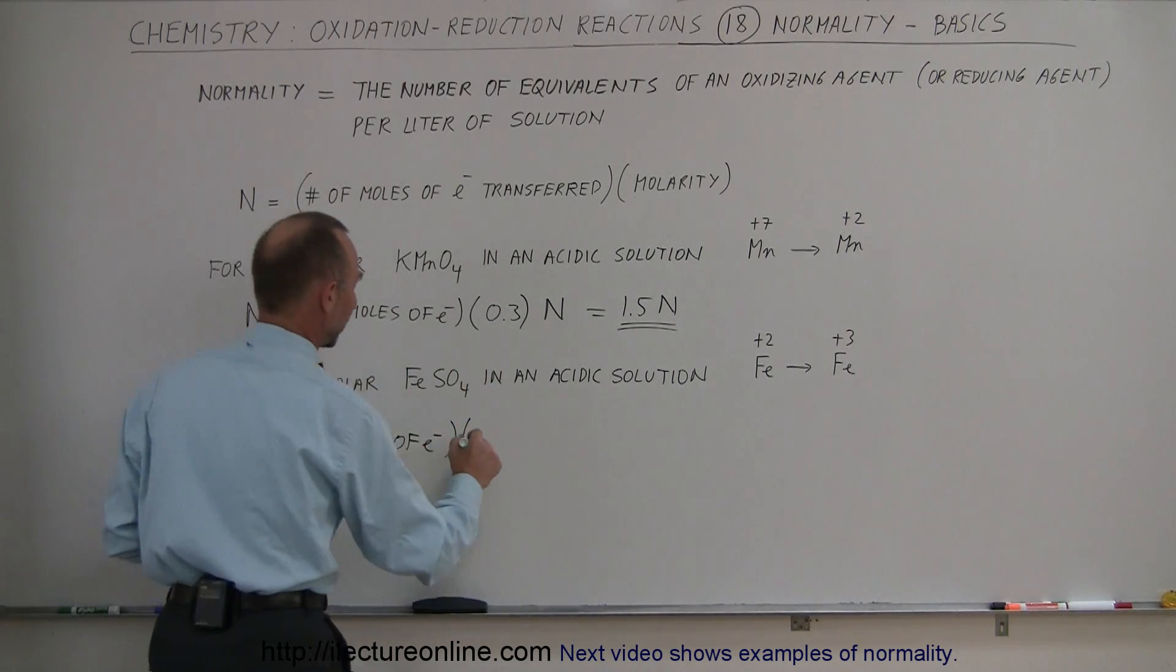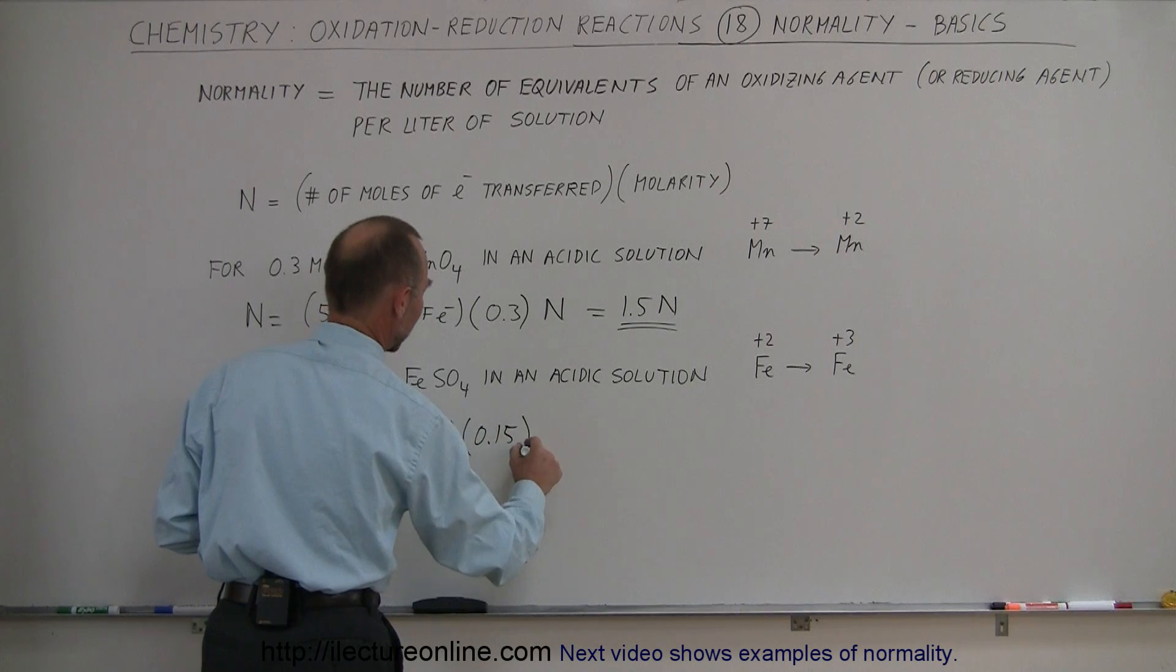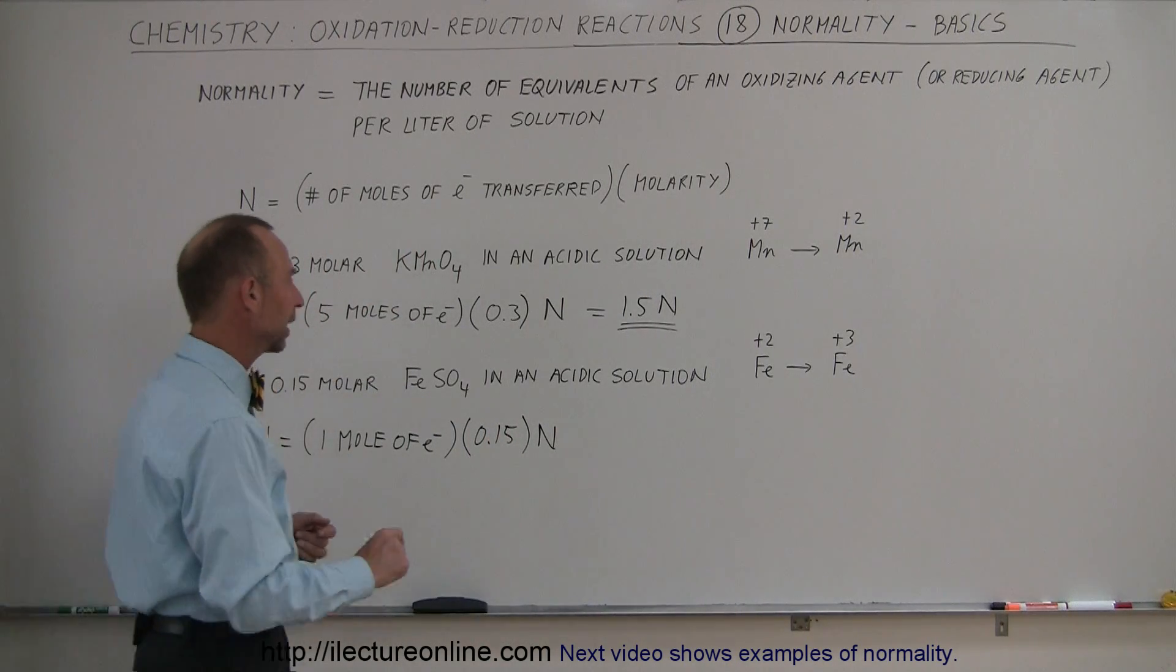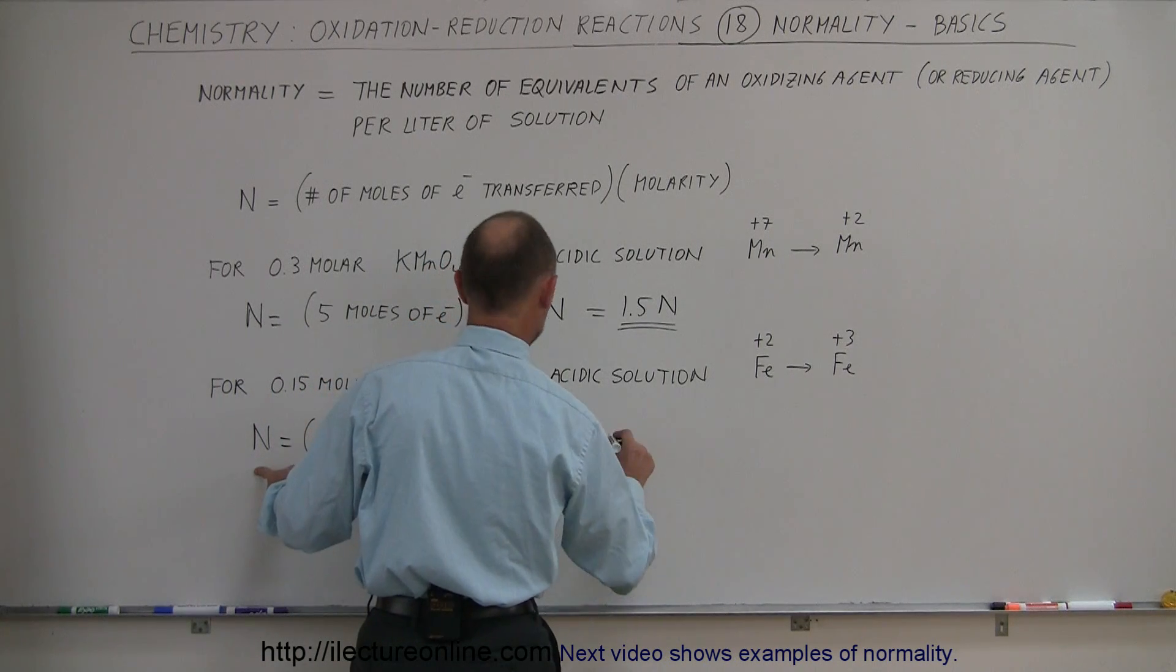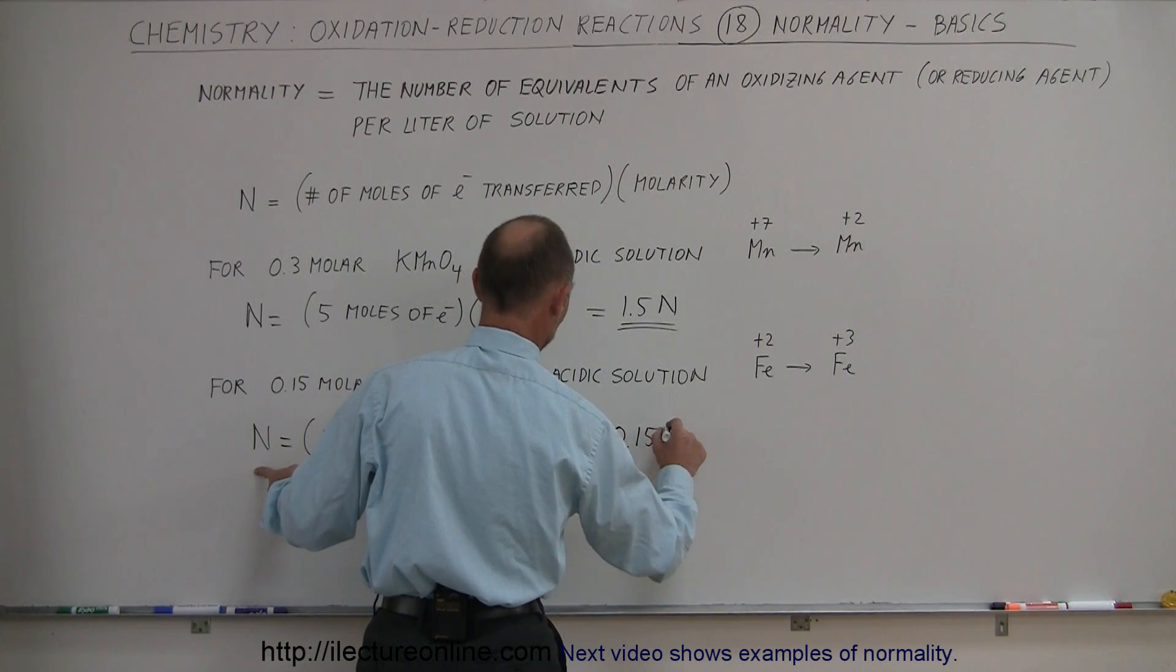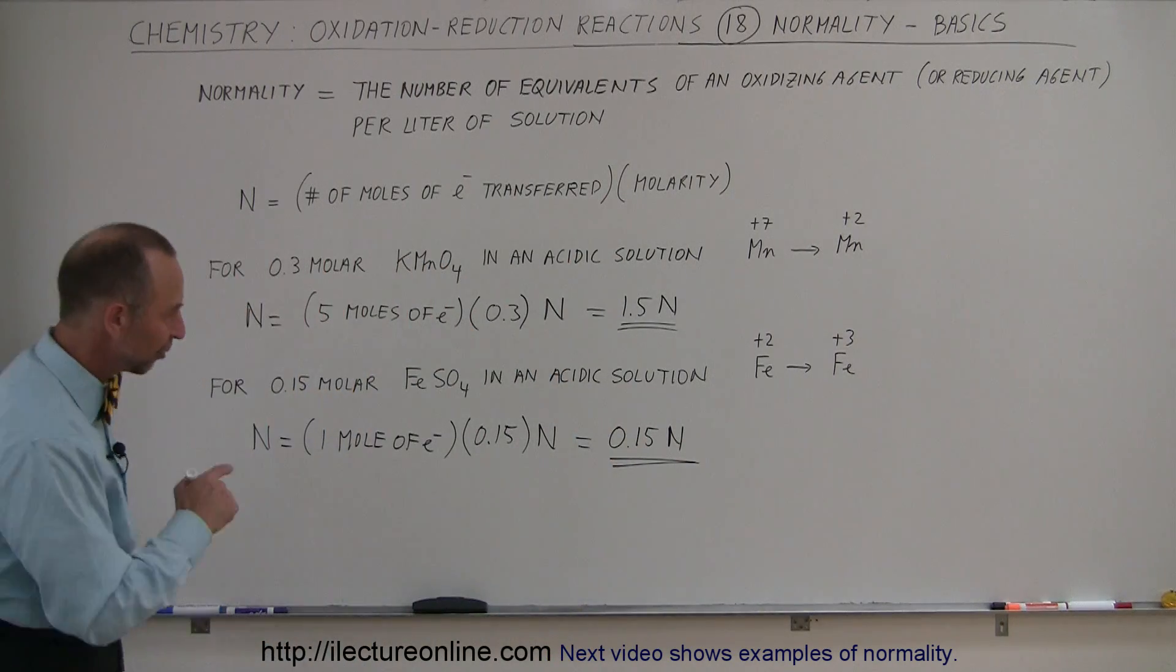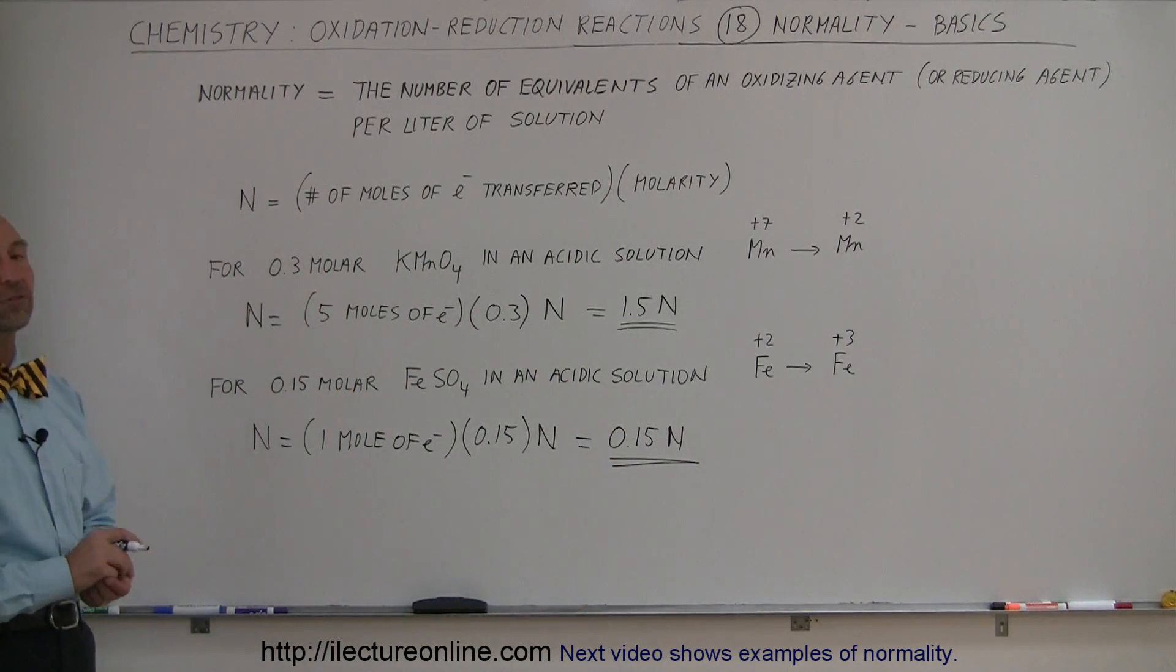In this case, the molarity for this example was 0.15, and the units will be N for normality. So that's what we call the normality of this particular solution of iron sulfate when they're mixed together in an acidic solution.